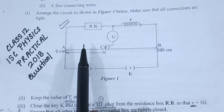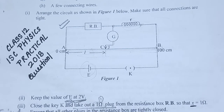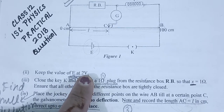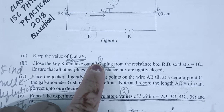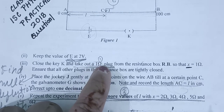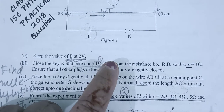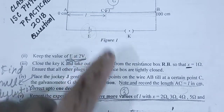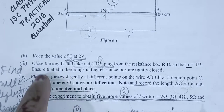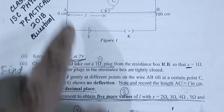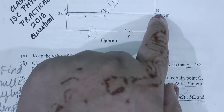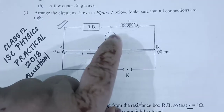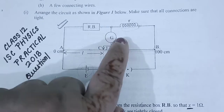In this experiment, you have to keep the voltage at 2 volts, then take out the 1 ohm plug from the resistance box — that means you are supposed to include 1 ohm resistance in the circuit. Then you have to place the jockey on the wire AB and find the point where the galvanometer reads zero.